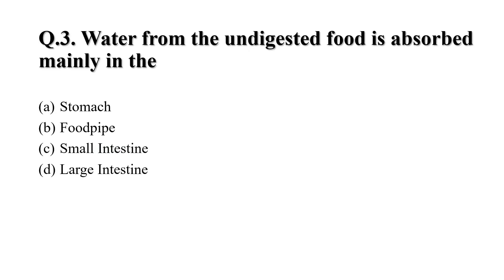Question 3: Water from the undigested food is absorbed mainly in — Option A: Stomach. Option B: Food pipe. Option C: Small intestine. Option D: Large intestine. Your correct answer is Option D, the large intestine.